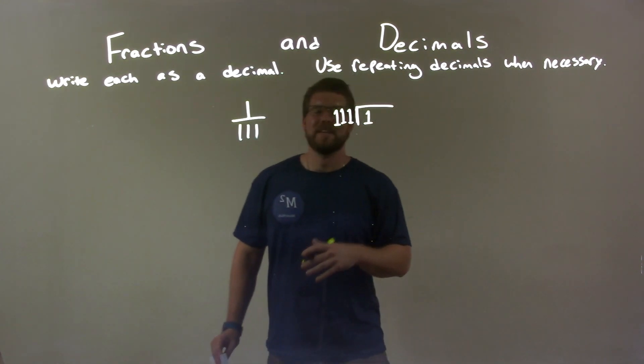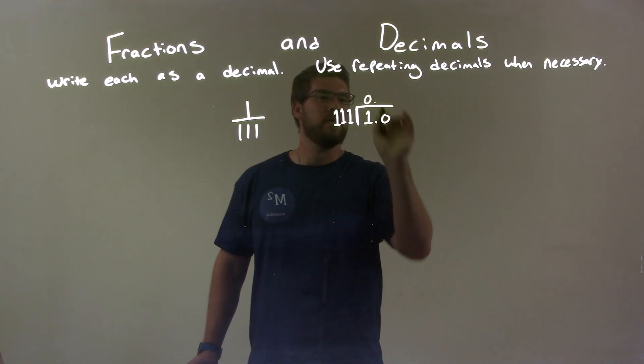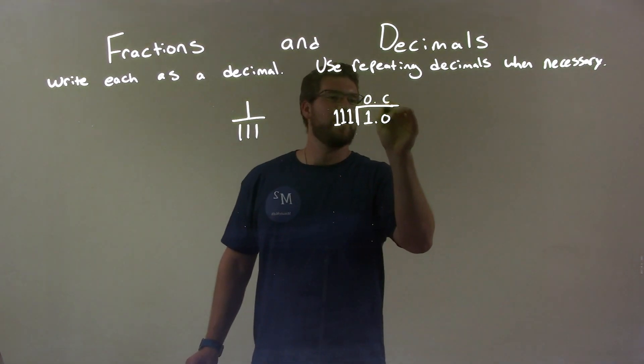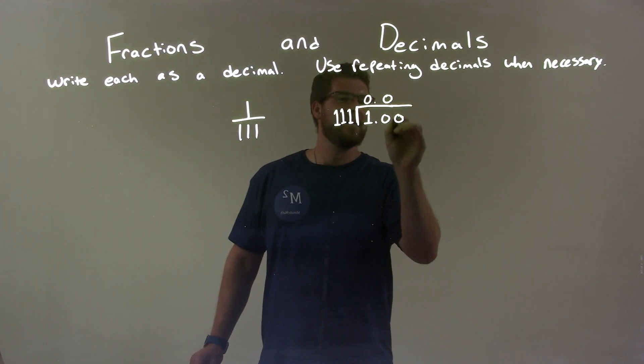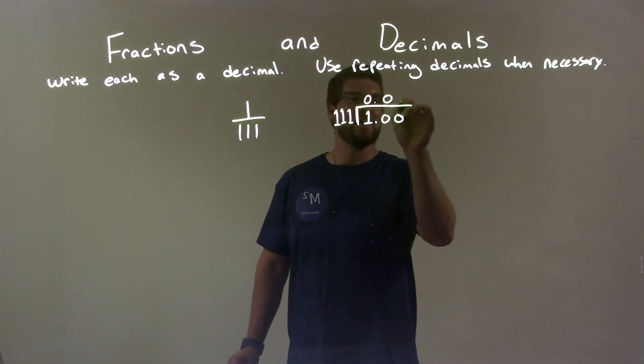Well, 111 can't go into 1, right? It's too small. So we have 10. Well, can 111 go into 10? No, it's too small. So we have another 0. Can 111 go into 100? No, 100 is still too small. We add a 0. We add another 0 here.